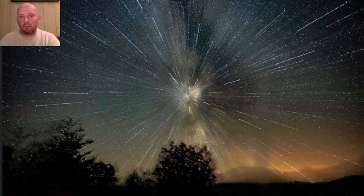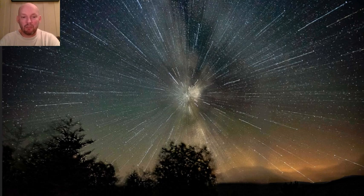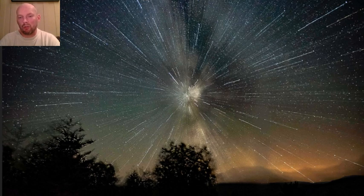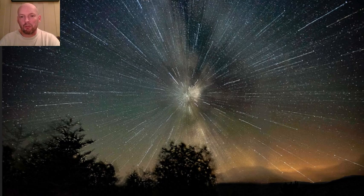So when the meteorites hit our atmosphere, they go from one point and all over the globe. They come from one point, but they spread out all over.